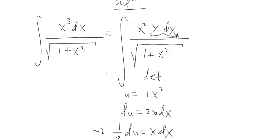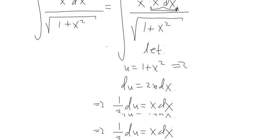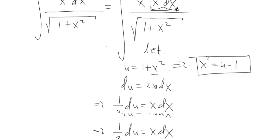We need to substitute all the X's for either U's or DU's — that's why it's called U substitution. There should only be U's and DU's in the integral, and then it becomes straightforward to integrate. I've solved X dx in terms of DU. I can substitute X dx with 1 half DU and 1 plus X squared with U, but I still have X squared remaining. Simple — rearrange U equals 1 plus X squared and solve for X squared: X squared equals U minus 1.